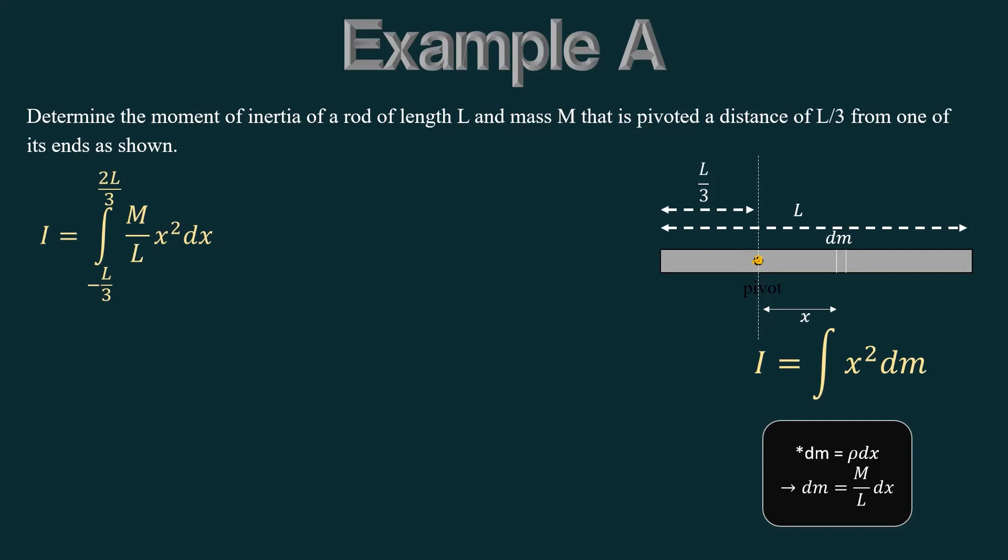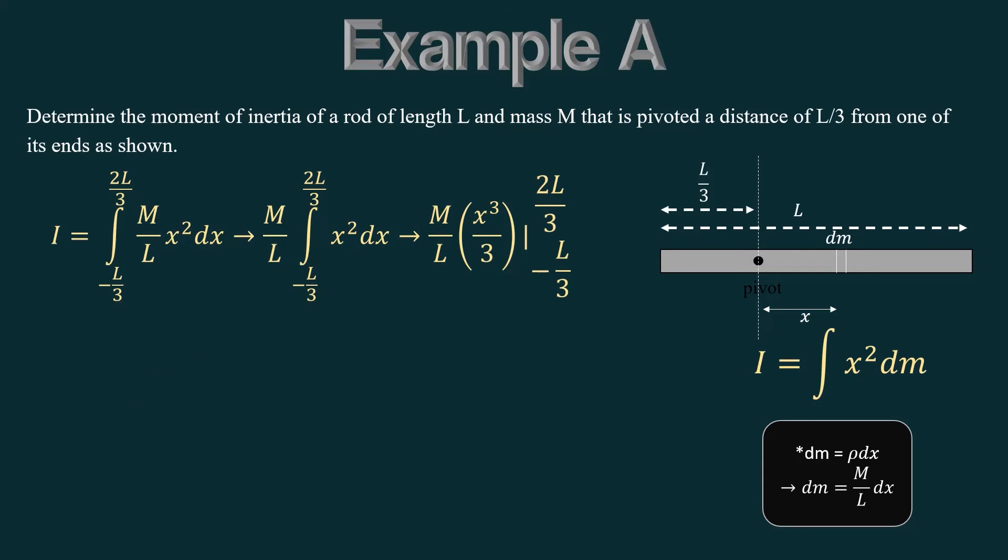So our bounds for our integral, we have our pivot point here. We'll say the left side is negative. So that's L over 3 on the negative side. And then you have L over 3 on the left. So you have two thirds L on the right side. So that's the bound for the integral. And it's a pretty simple integral because M and L are both constants. We pull out the constants and we're just integrating X squared DX. So it's obviously X cubed over 3. Then we just plug in the bounds. And the answer to the moment of inertia is ML squared over 9 for this rod.